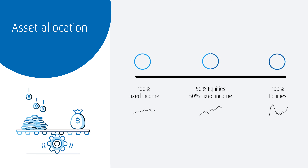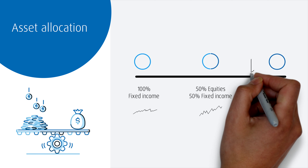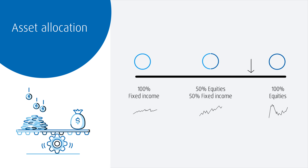Maybe you have one investment account that is tied to a very long-term goal like retirement. It's possible that your asset allocation is closer to 80% equity and 20% fixed income.